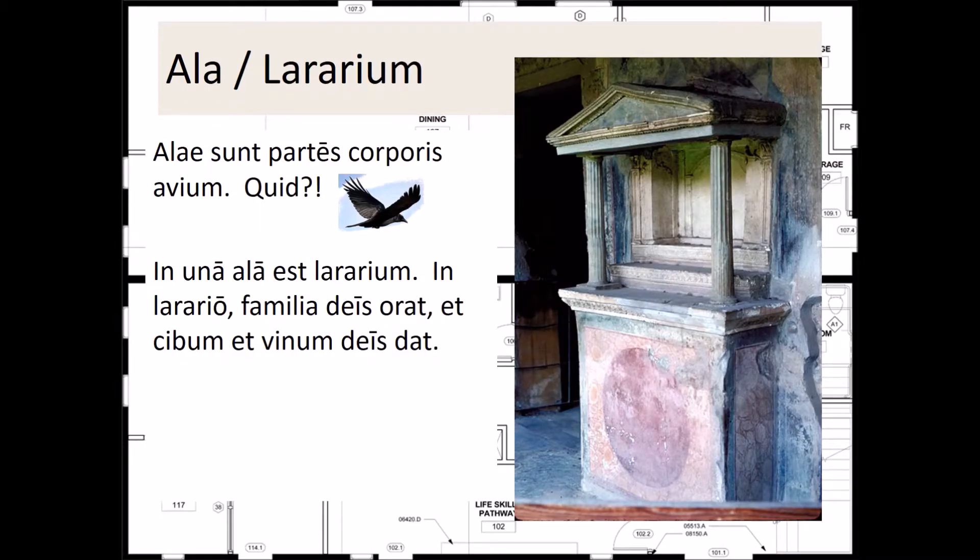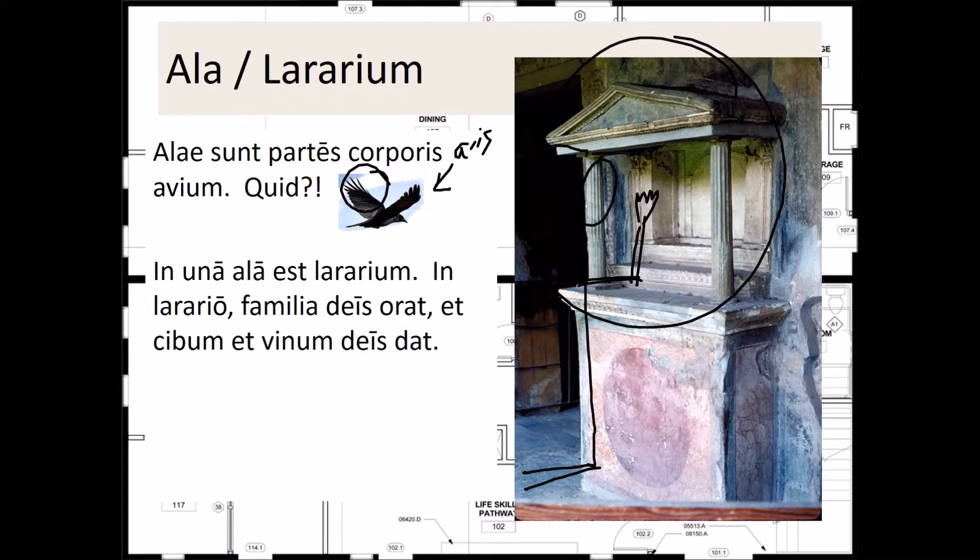The next areas in our Roman domus are the ala and the lararium. Ala sunt partes corpus avium. Quid hic est avis? Hic est ala. In una ala est lararium. In larario familia deis orat et cibum et vinum deis dat.